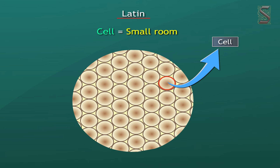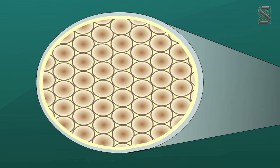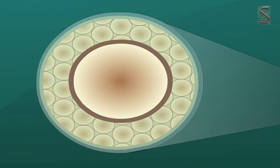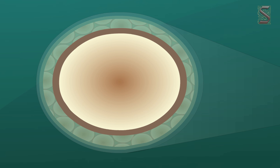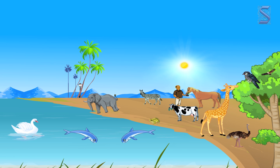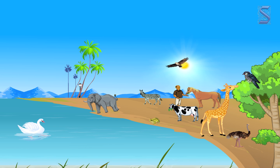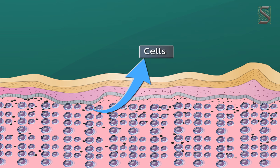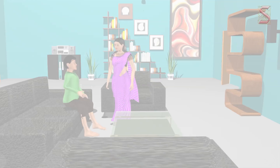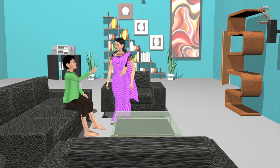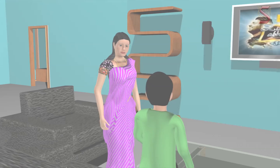In Latin, 'cell' means small room. Hooke also noticed that the compartments were empty and the cells of the cork were dead without any content. Every living thing may be different from one another but is made up of these separate tiny units called cells.